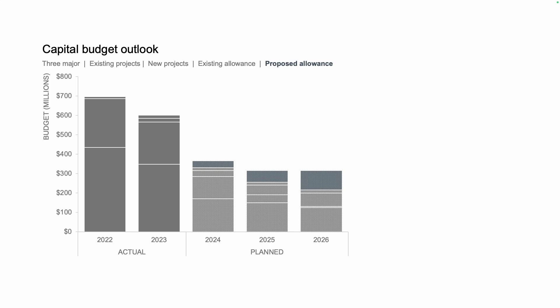As it turns out, this graph is a call to action — a request to increase the existing allowance to better match the proposed allowance. You would never know that in the original. The biggest challenge I have with this stacked bar chart is that the increasing gap between our existing allowance and our proposed allowance, our main call to action, just isn't really visible.